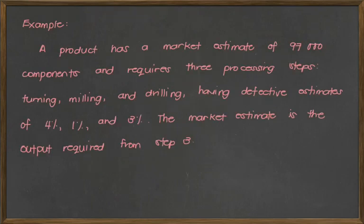A product has a market estimate of 97,000 components and requires three processing steps: turning, milling, and drilling, having the following defective estimates of 4%, 1%, and 3%. Now the market estimate is the output required from step 3.